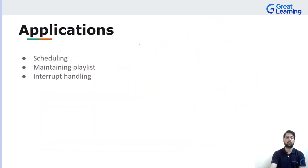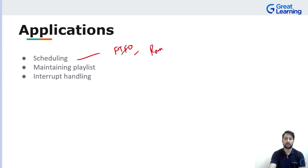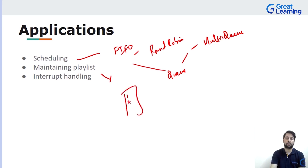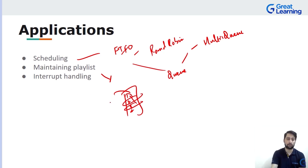Queue is used in scheduling algorithms of the operating system, such as first-in-first-out scheduling, round robin, and multi-level queue — in all these algorithms, queue is used for storing data or processes. It is also used in maintaining playlists: when you have 10 songs in a queue, after one song, the next song in the queue is played, and it goes on — a queue is used for maintaining such a playlist.